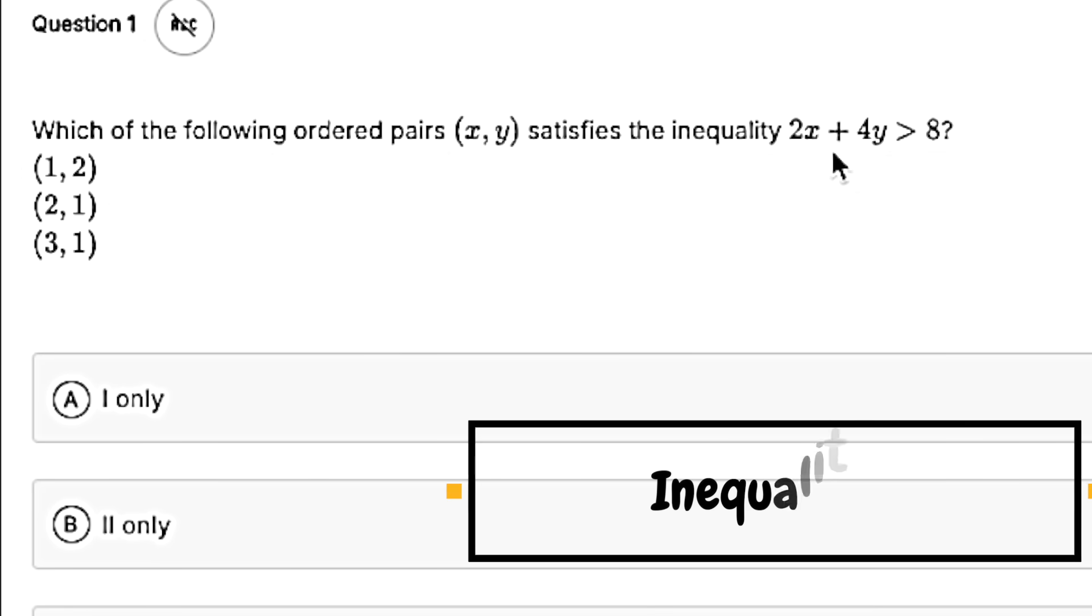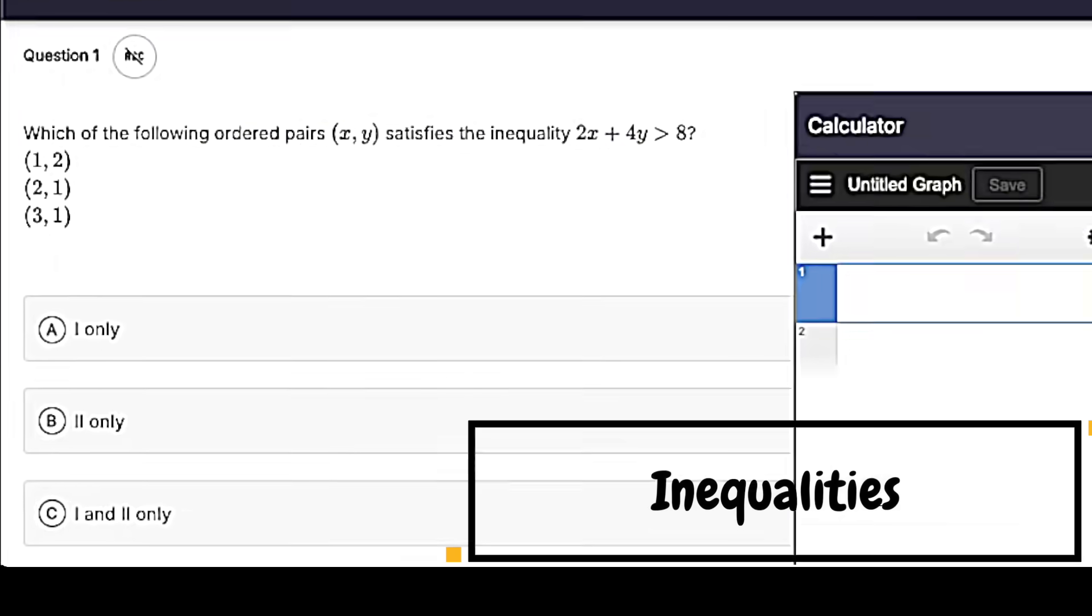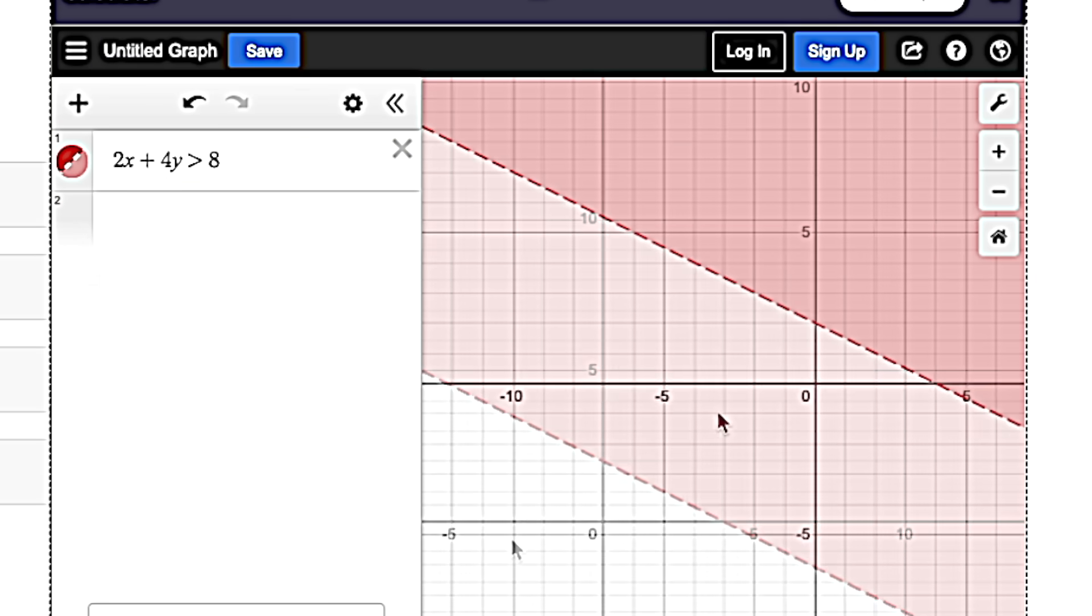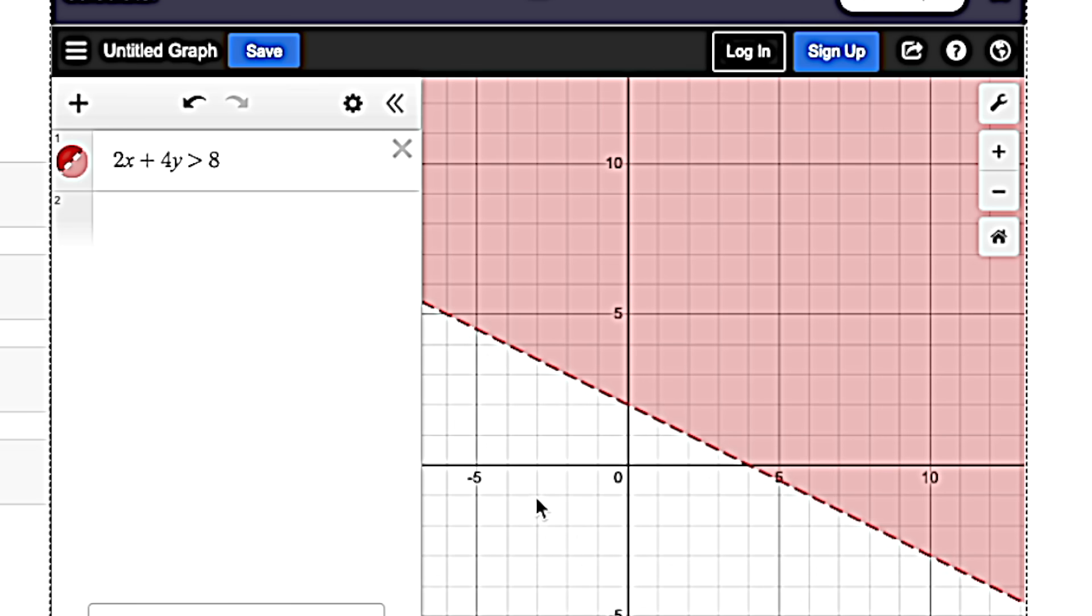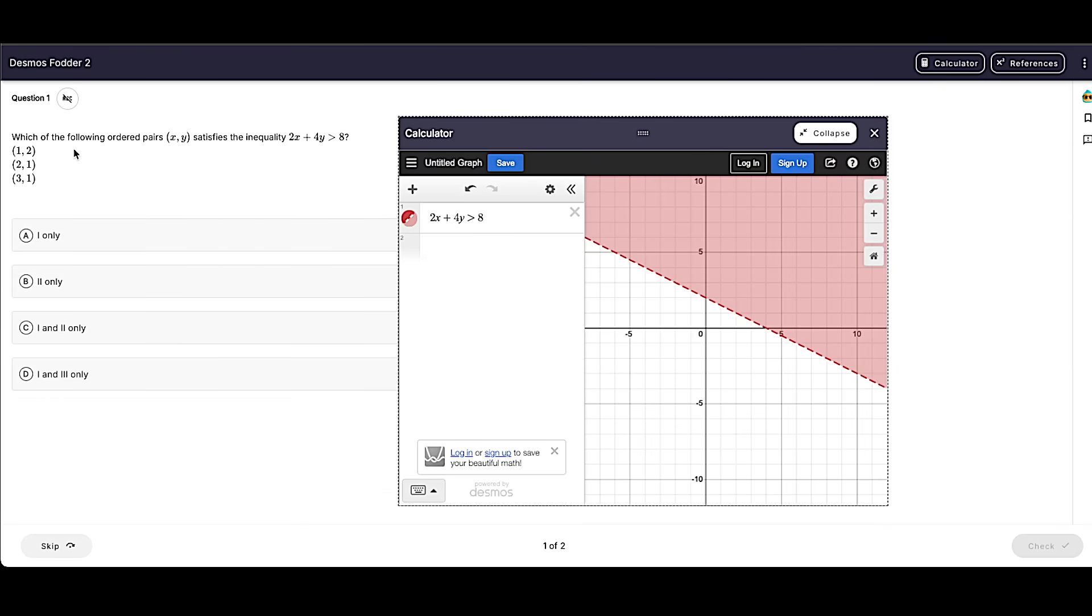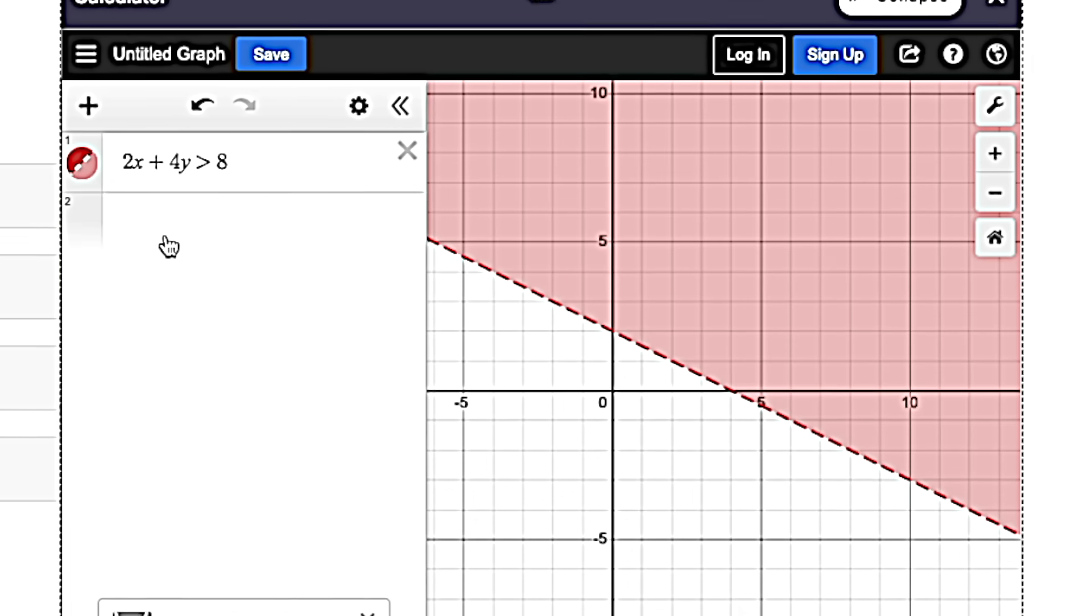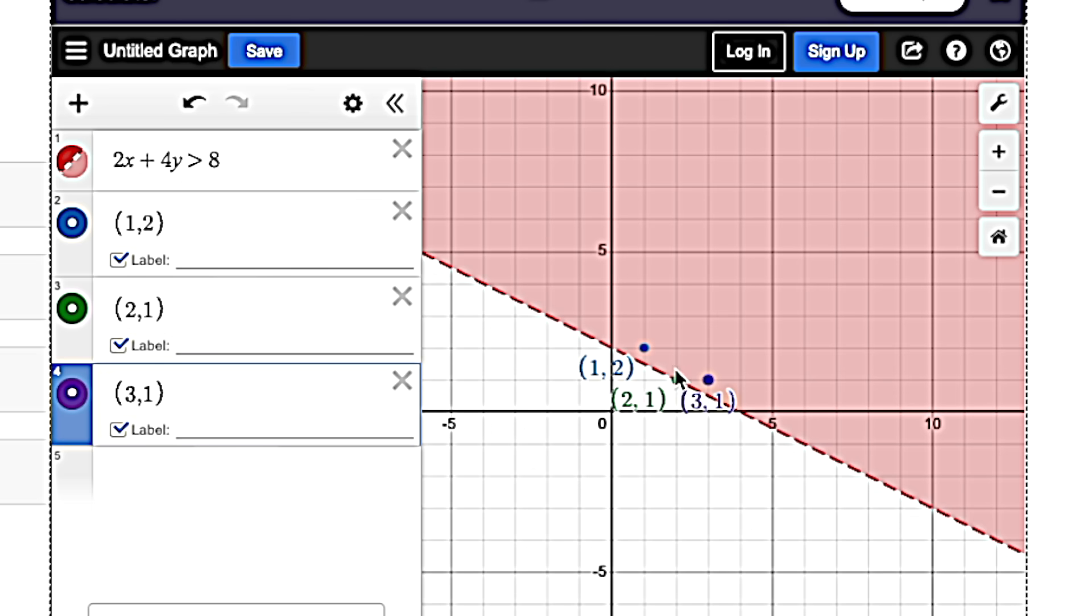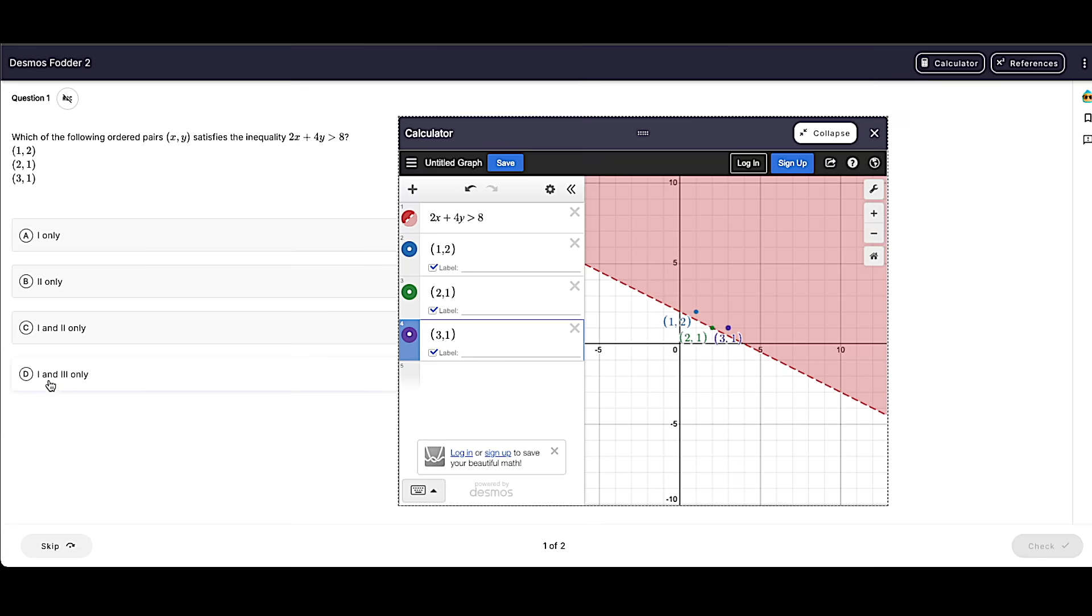Desmos also works for inequalities. As usual, we plug in our inequality and we just have to remember that with inequalities, anything that is shaded is going to be a solution. A dotted line means the line itself is not a solution. So it's asking which of the following pairs satisfies the equation. You can eyeball it or you could type them in. So I'm going to put in all three of those. And as we can see, the blue one and the purple one work. Two, one is right on the dotted line. So two, one does not work. So it'd be one and three only.